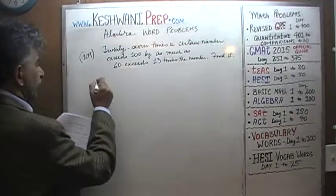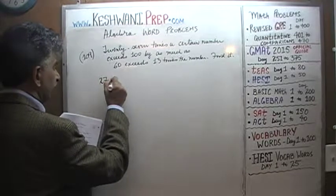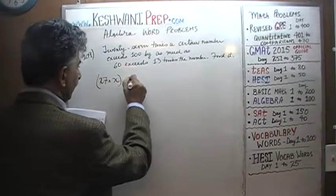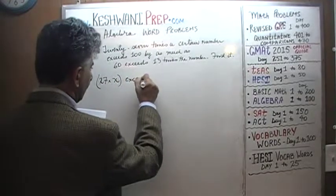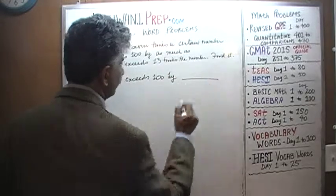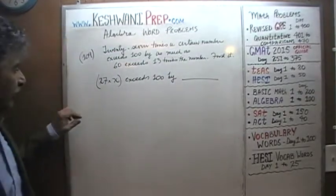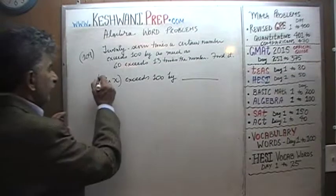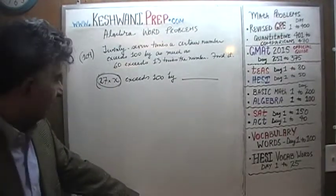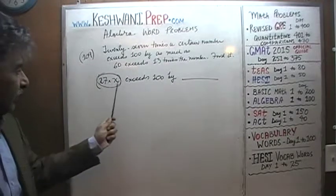So here we go. 27 times a certain number — let's call it X. How much does 27X exceed 100? Think of 27X as a number — pretend it's some number more than 100.